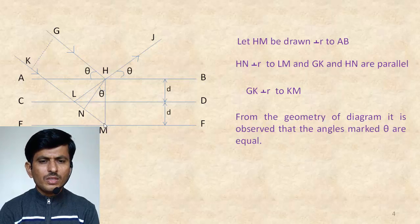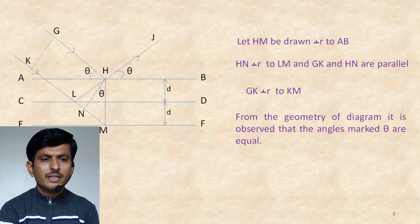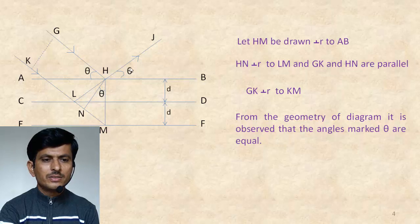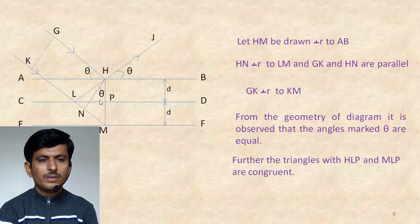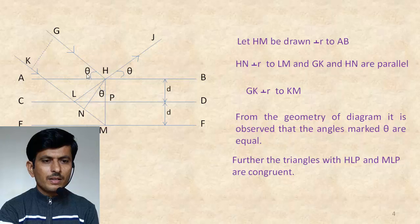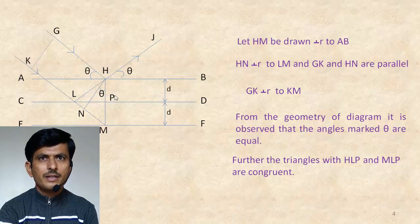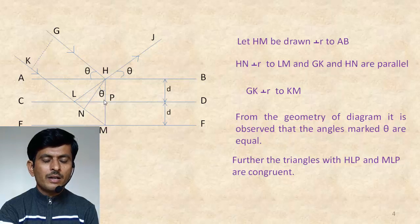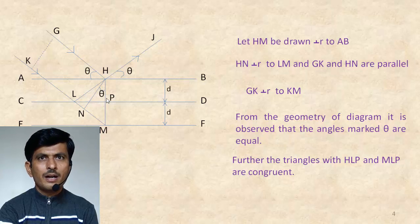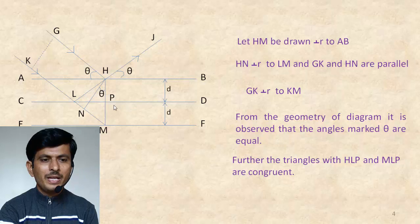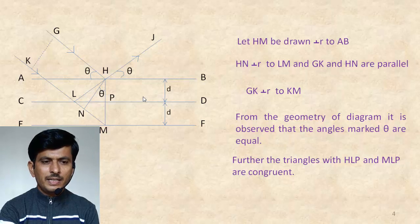Again, from the geometry of the diagram, it is observed that the angles marked with theta are equal. And therefore, the triangles HLP and MLP are the congruent triangles with LP common, and both are the right angled triangles. Therefore, again, the side HP is equal to MP.